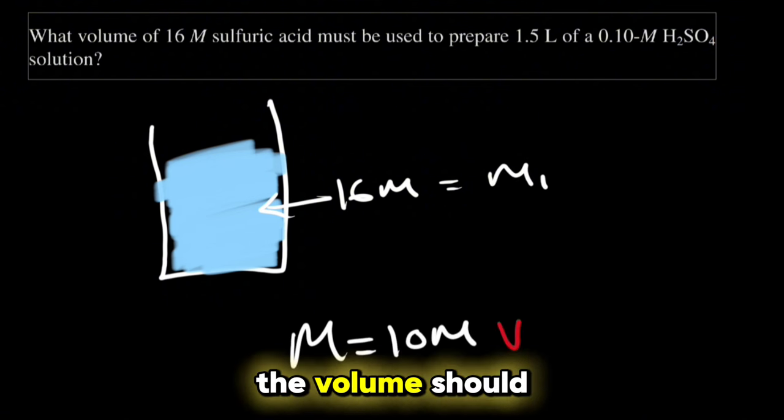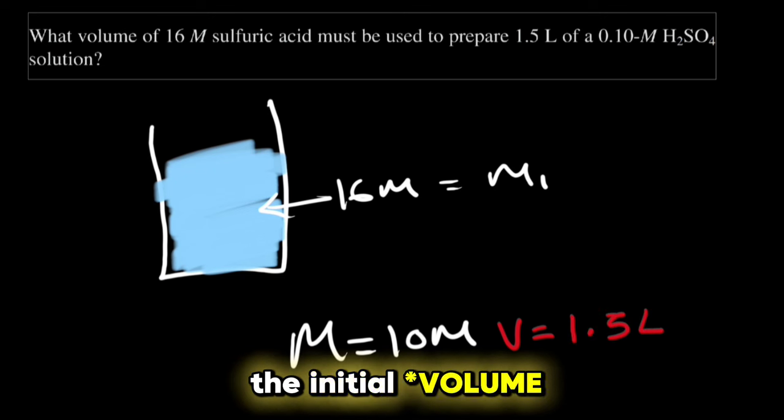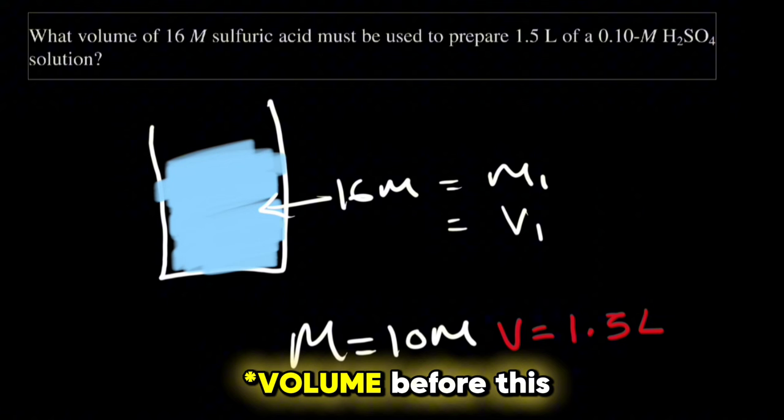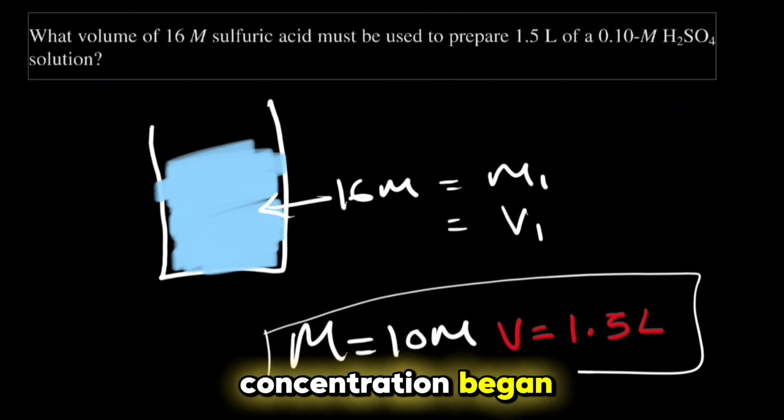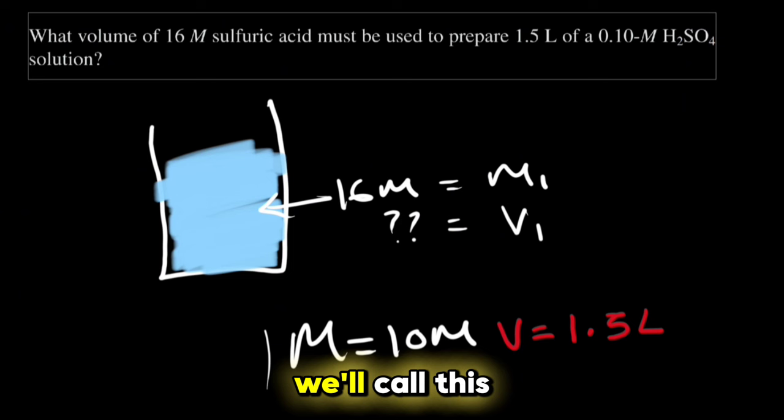What is the initial volume? That's what we're going to look for. We'll call this M1 and we'll call this V1. We'll call this V2 and we'll also call this M2.